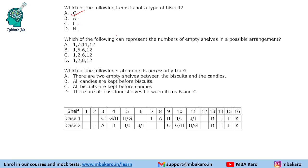Question 3: Which of the following can represent the number of empty shelves in a possible arrangement? Among the options given, we check 1, 2, 6, 12 as a possible answer based on the shelf counts in our arrangements.